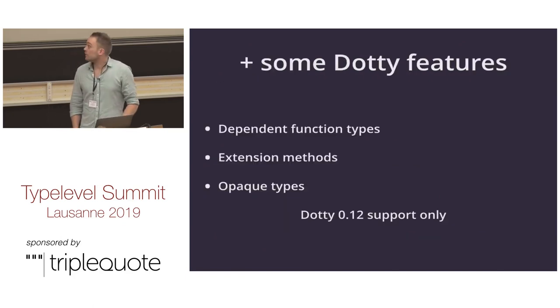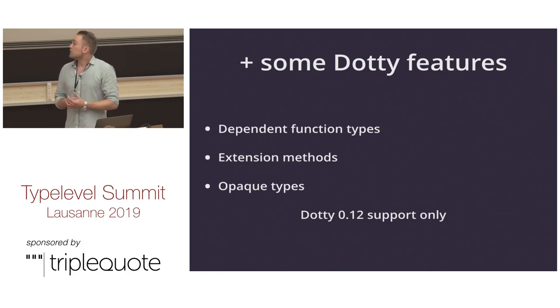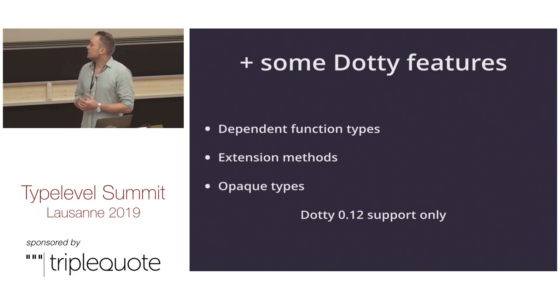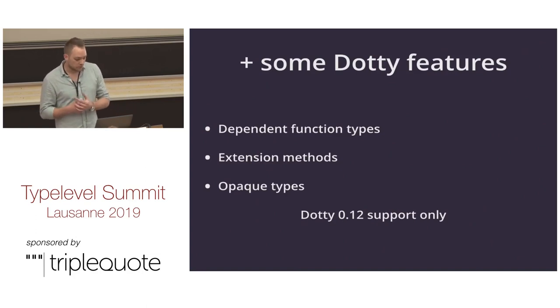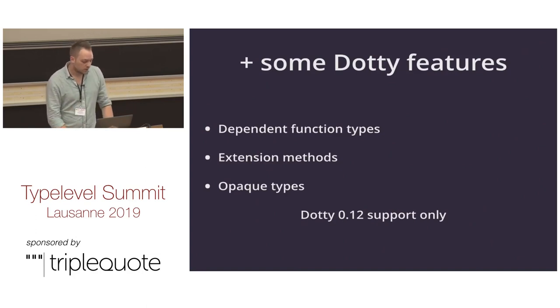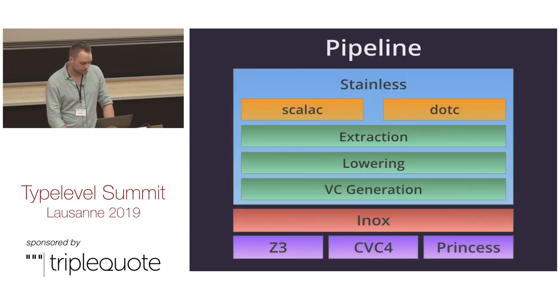We also support some Dotty features such as dependent function types, extension methods, and opaque types. But we're currently stuck on Dotty 0.12 — we haven't had time to upgrade to the latest Dotty, but that's definitely something we want to look at.